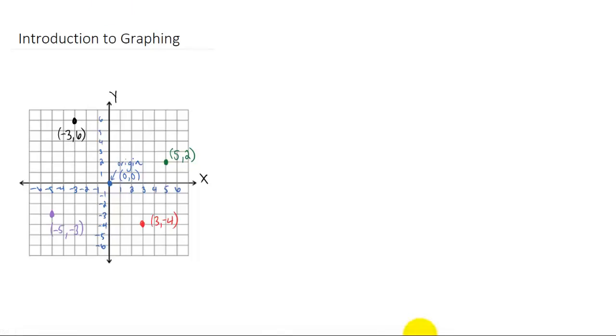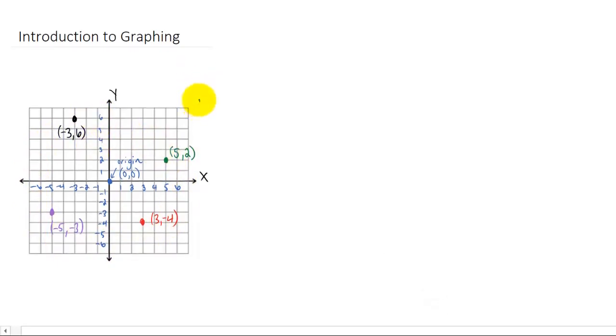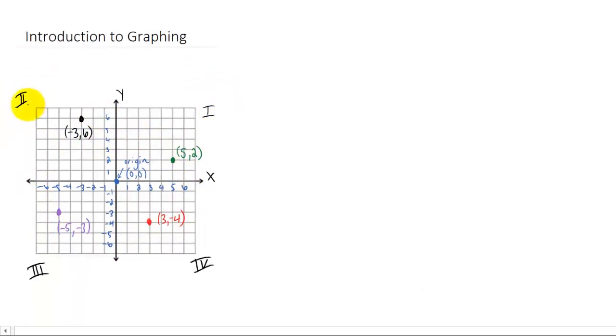Just keep in mind that the x coordinate always goes first and the y coordinate always goes second. You'll notice that an x and a y axis split up this plane into four quadrants. We number these quadrants. This is quadrant one, over here is quadrant two, quadrant three, and quadrant four. And this is one of those cases where you actually get to use Roman numerals. So enjoy it.